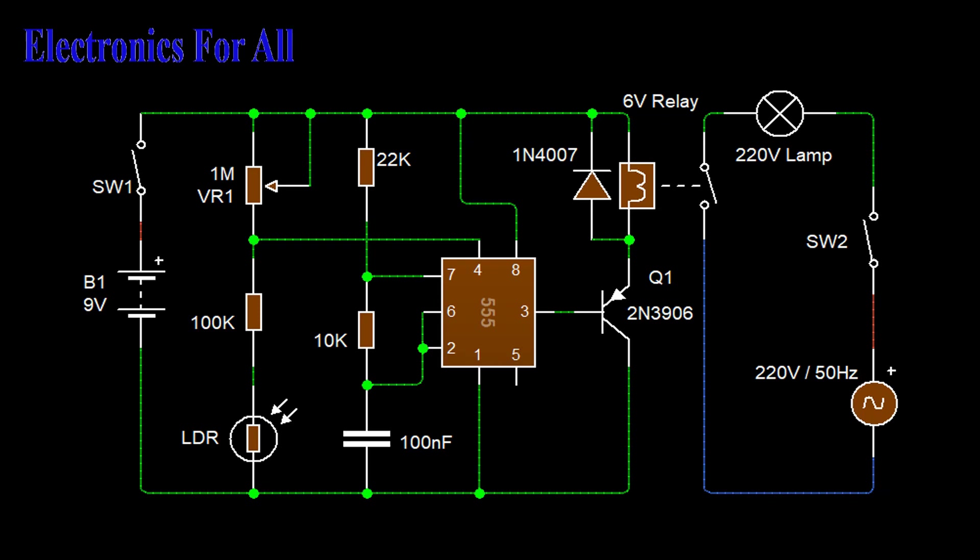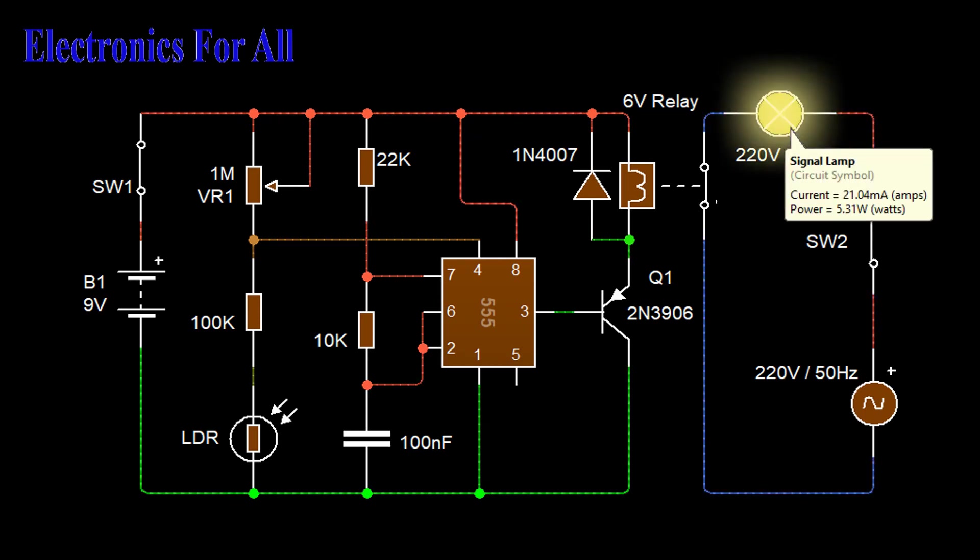Now when the darkness falls on the LDR, the resistance of the LDR increases drastically as explained in introduction. This increase of resistance in the second branch, the one with LDR of voltage divider, will be enough to change the ratio of voltage sharing between the two branches of voltage divider section.